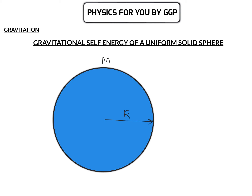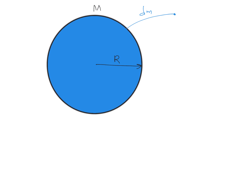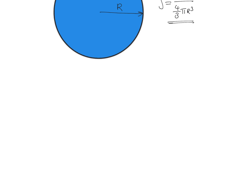We will assume that we are taking small parts of mass dm from infinity and adding them to this structure so that we build a sphere of mass M and radius R. The density of this sphere is mass by volume, which is M divided by (4/3)πR³. We consider an intermediate situation where we keep adding masses, and at that intermediate stage its radius is equal to x.